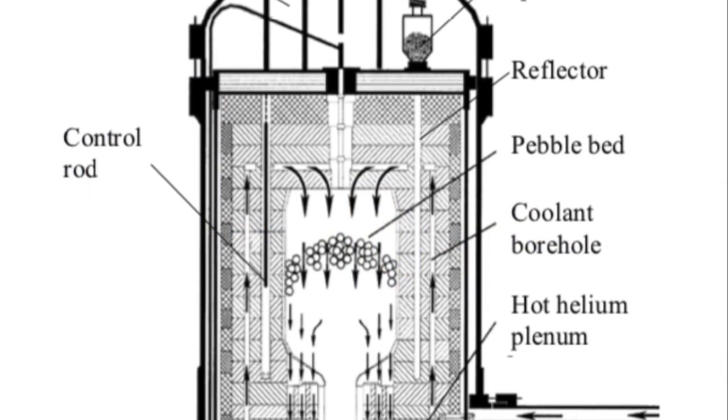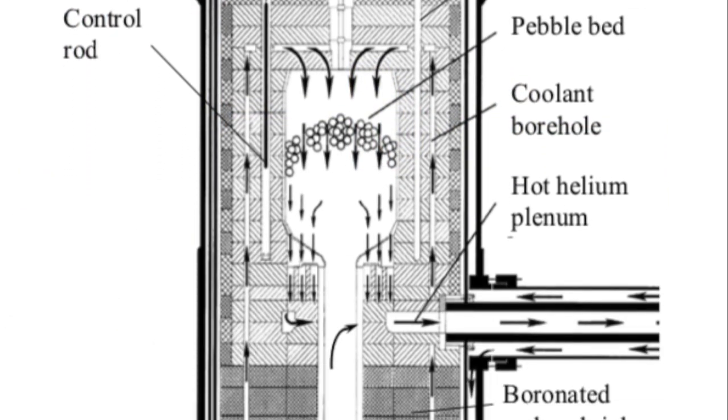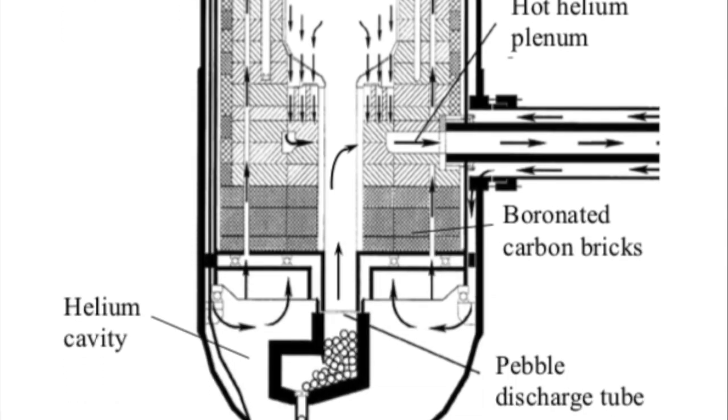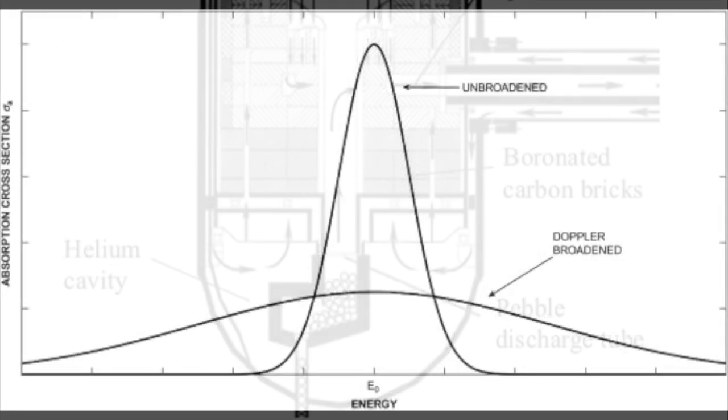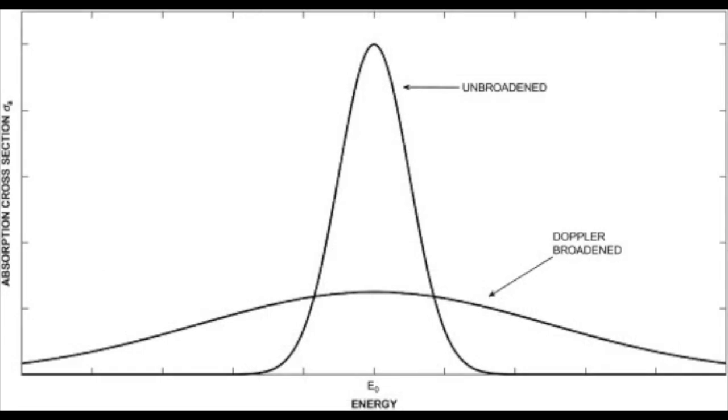The chief advantage of pebble bed reactors, however, is their inherent safety. Like PWR and BWR fuel, TRISO fuel exhibits Doppler broadening, wherein the neutron absorption cross-section of uranium-238 increases with temperature, reducing the efficiency of the reaction.